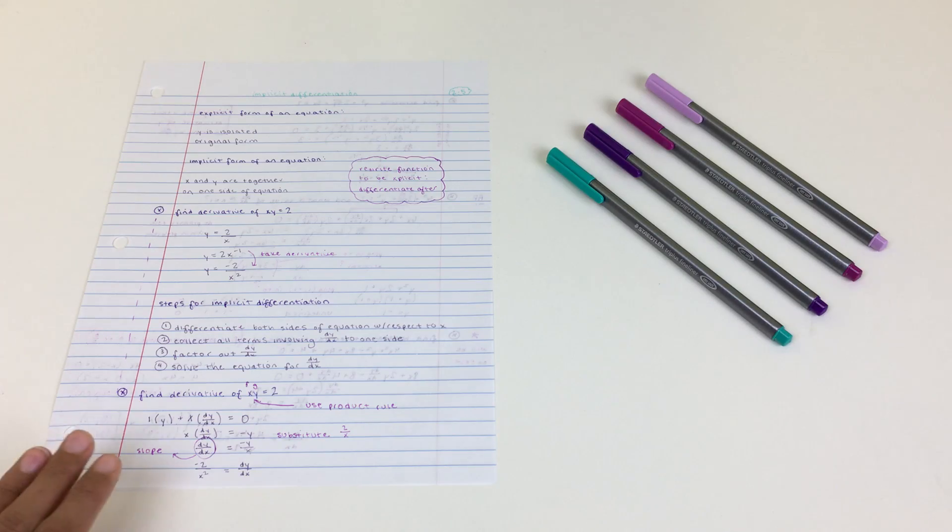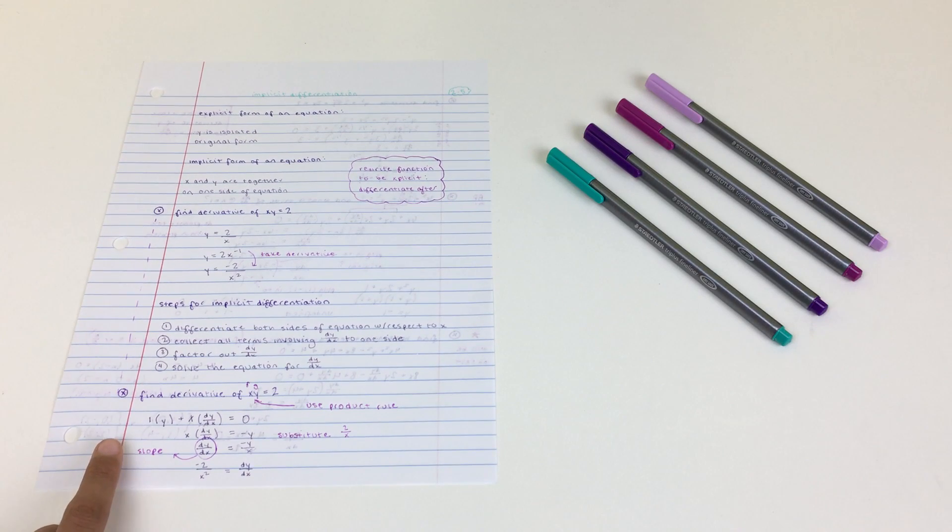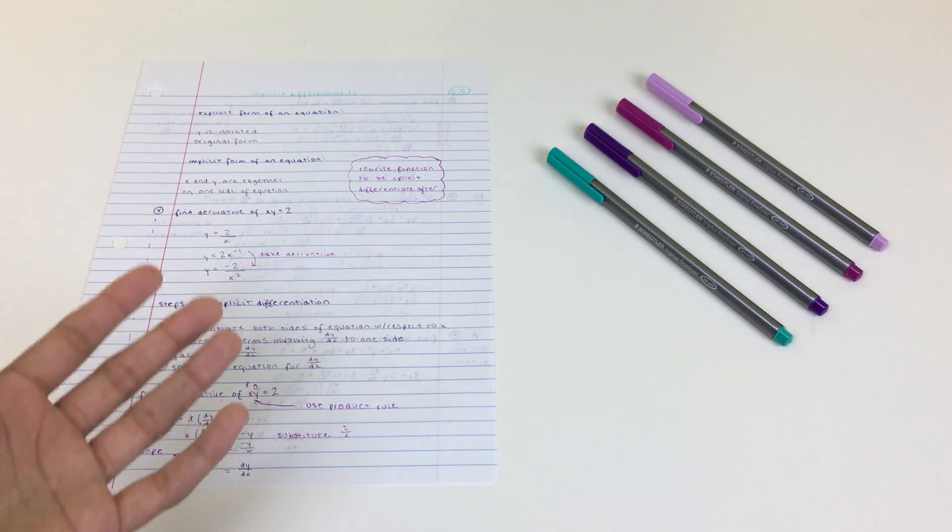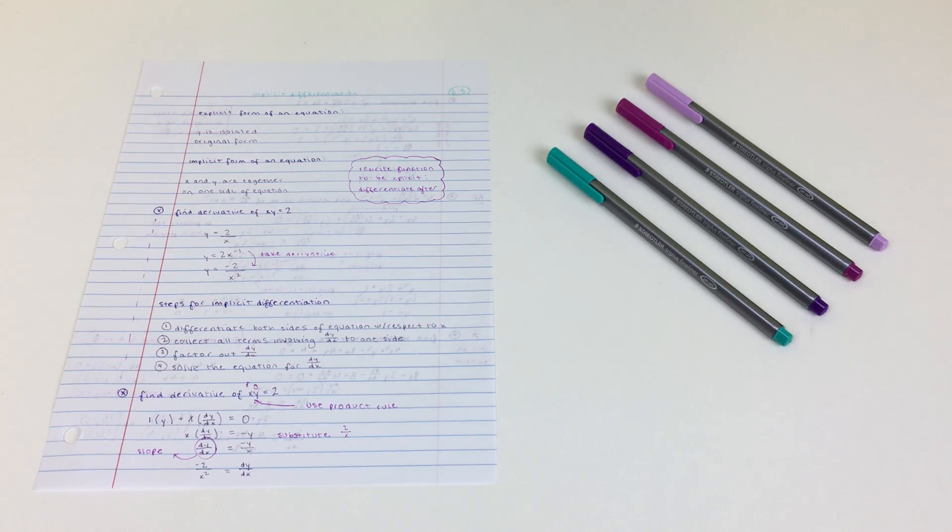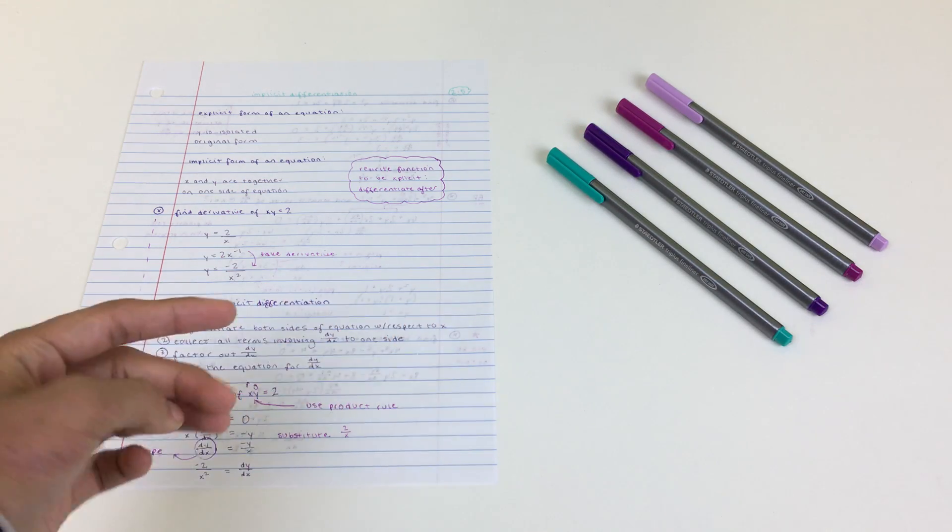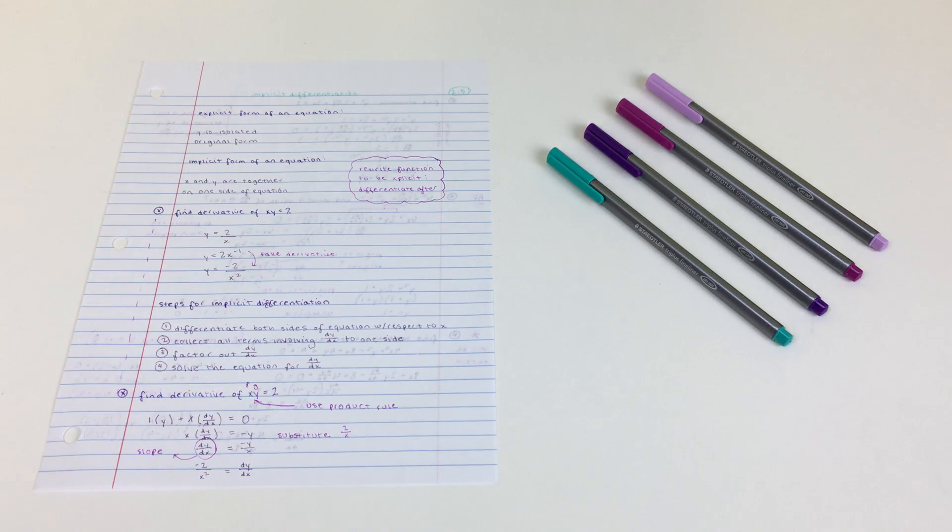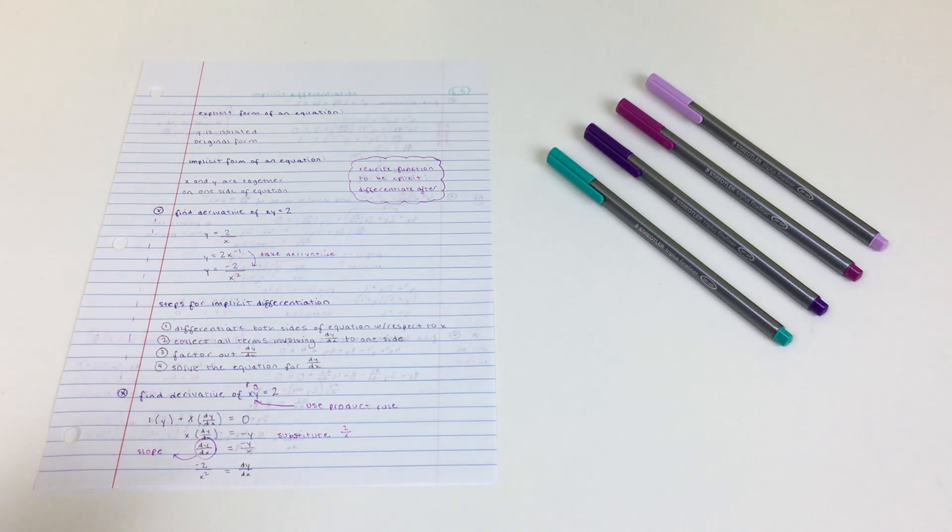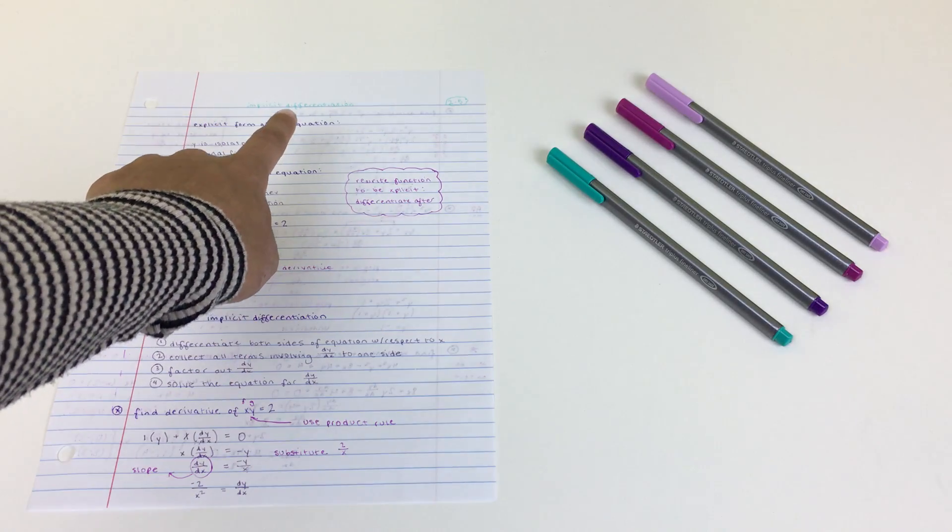When I take notes in math class, I usually just use loose leaf paper and I also like to use my Staedtler Triplus Fineliners. I've talked about these so much—they're my favorite pens to use. Usually I have four colors: three of them are next to each other on the color wheel and are very similar, and then the fourth color complements the other three. So I use that fourth color for just the title.